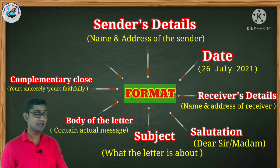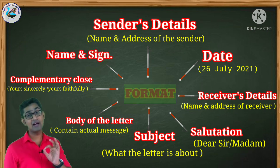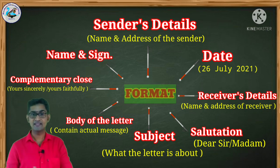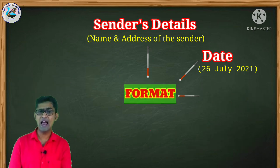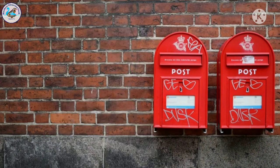The eighth and last component is the name and signature of the sender. A formal letter must have all these eight things. Next, I'm going to show you some important points to remember before writing a formal or informal letter, along with some examples.